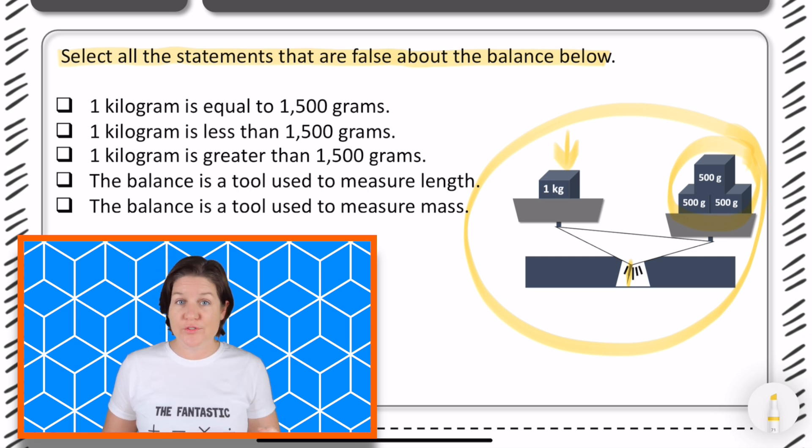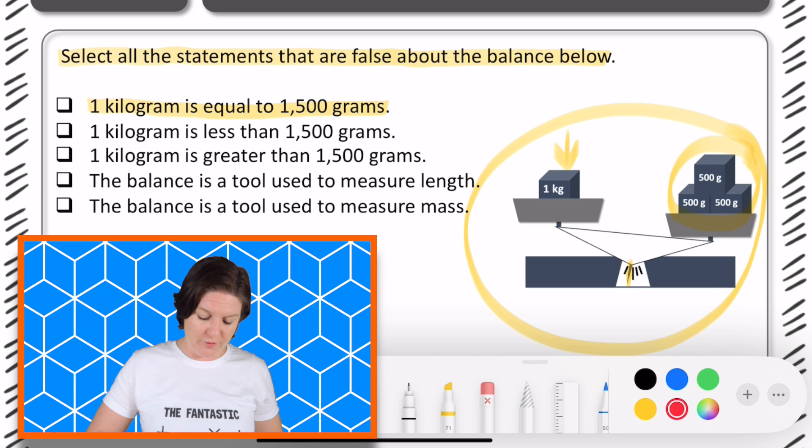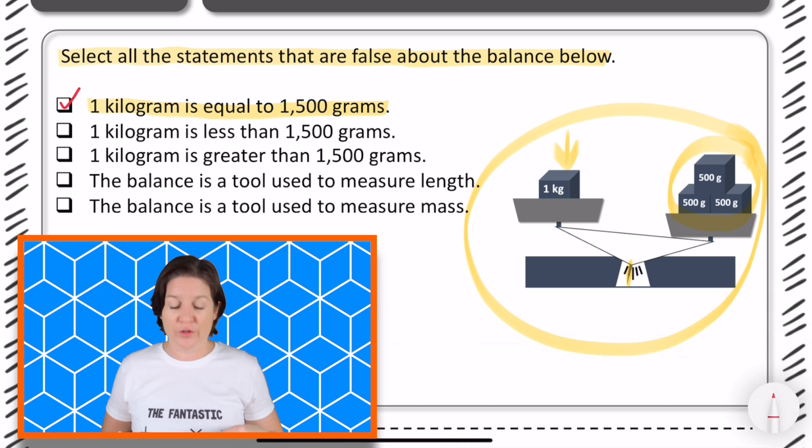All right. So, let's look at the answer choices. Remember that we're looking for the ones that are false. So, we're trying to see which ones are not true. And those are the ones that we need to select. One kilogram is equal to 1,500 grams. Well, we do have one kilogram on the left side and we do have 1,500 grams on the right side. And we've already determined that they are not equal, that the 1,500 grams is greater. So, this one is false, which means we need to choose it because that's what the question is asking for, the ones that are false. So, the first one is a false statement.